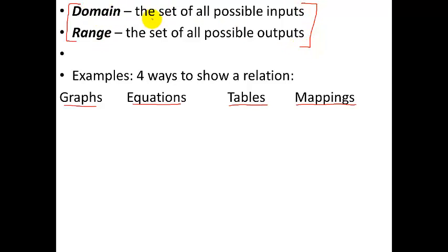Domain and range. Domain is the set of all possible input values. So the domain is going to be along the horizontal x-axis. And the range is the set of all possible output values, so along the vertical or y-axis. Okay. So a graph looks like this.